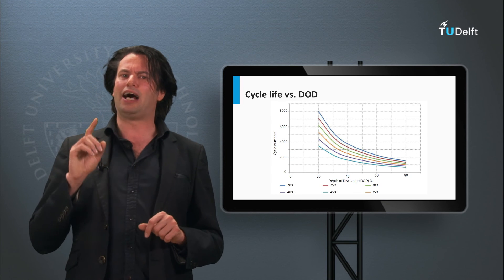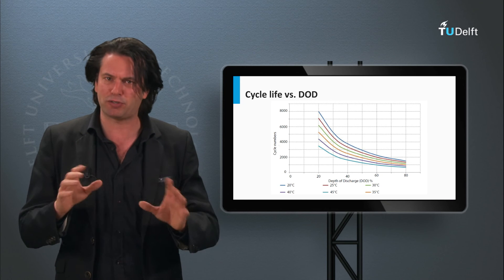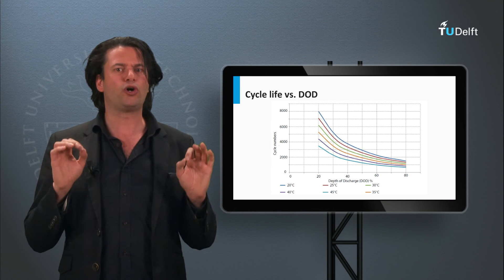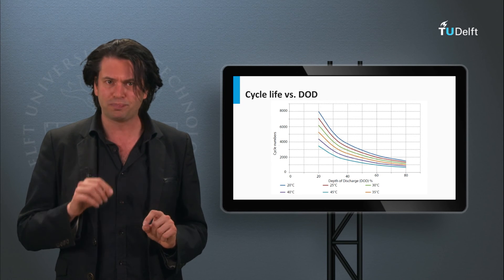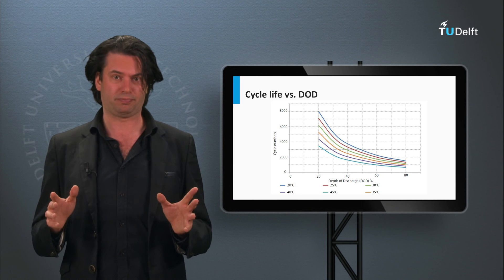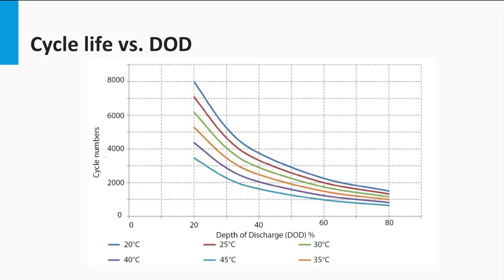Now the cycle life depends heavily on the depth of discharge until which those charge cycles last. Also, it depends on temperature. This can be seen in the graph shown here for a typical maintenance-free lead-acid solar battery. Clearly, the battery lasts longer under colder temperatures of operation. Furthermore, for a particular temperature, cycle lifetime depends non-linearly on the depth of discharge or DoD.